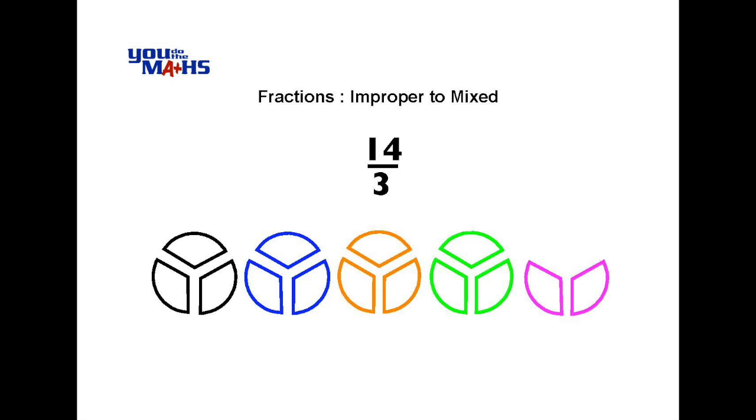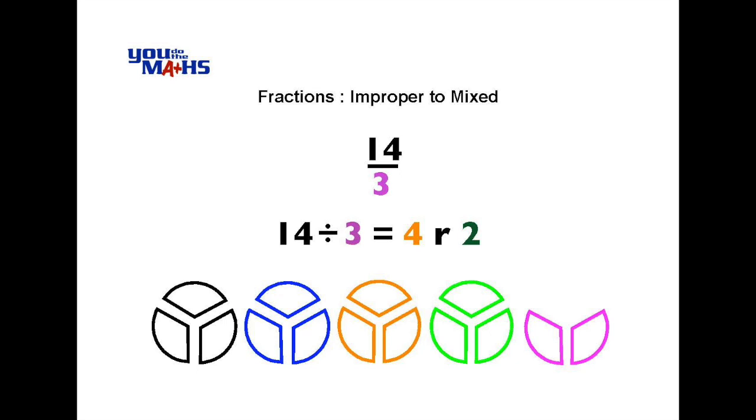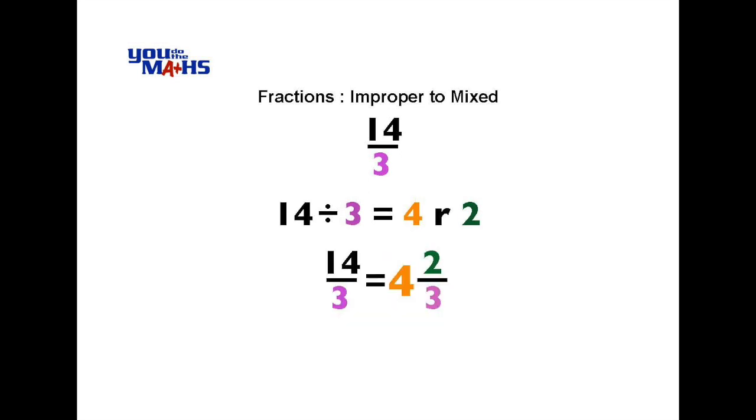Now to do the calculation to work out the mixed number, the thirds, or the 3 in the denominator is crucial. What we do is we divide the numerator 14 by 3 and we get 4 remainder 2. So 4 is our whole number in our final solution. The remainder 2 tells us there are two parts left over when we divide by 3. So that tells us the final solution is 4 and 2 thirds.